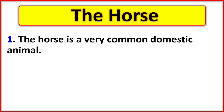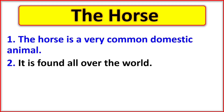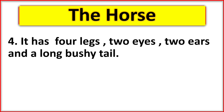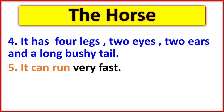The horse is a very common domestic animal. It is found all over the world. It is a healthy, strong, and tall creature. It has four legs, two eyes, two ears, and a long bushy tail.